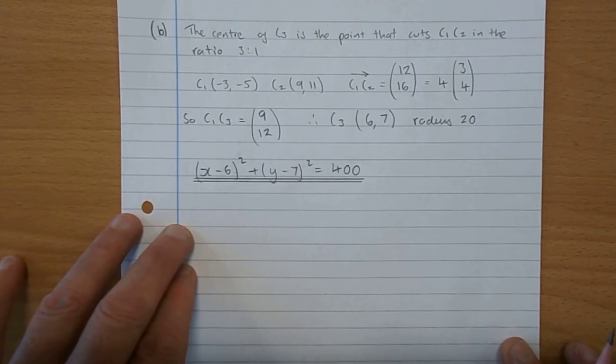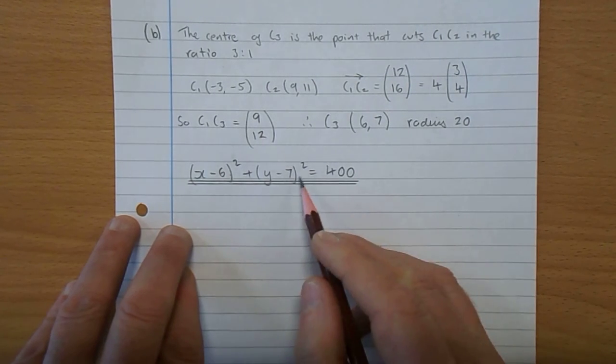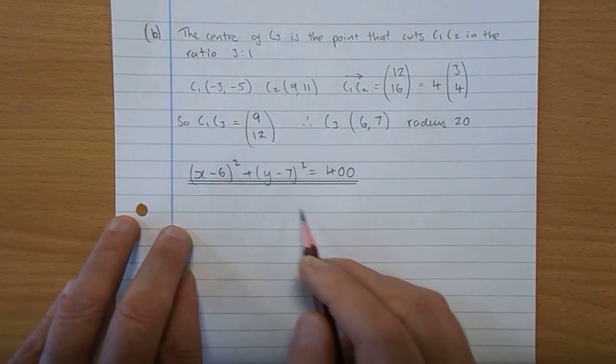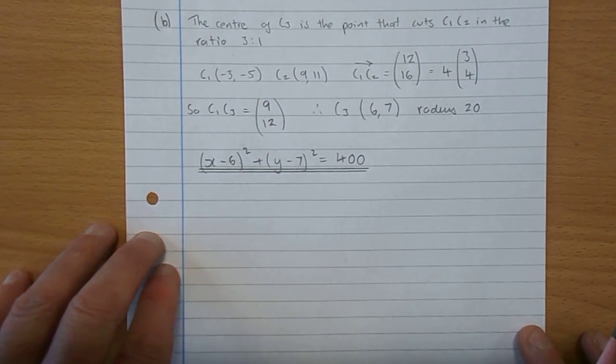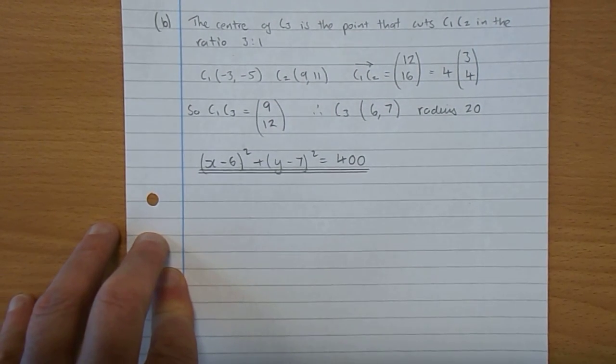So x minus 6 squared plus y minus 7 squared is r squared. x minus a squared plus y minus b squared is r squared. There we have it there.